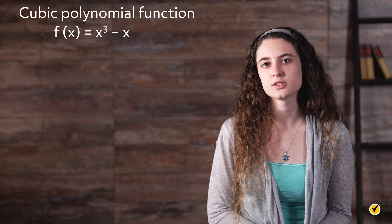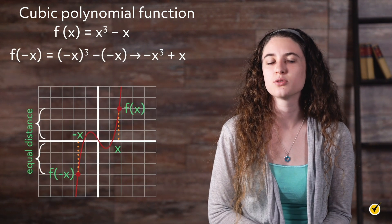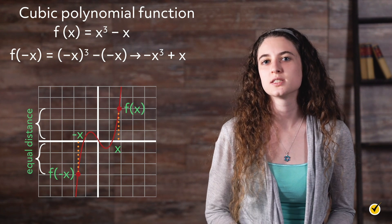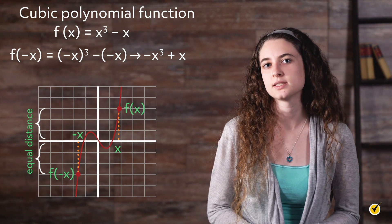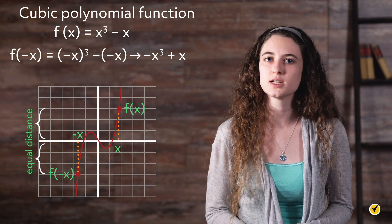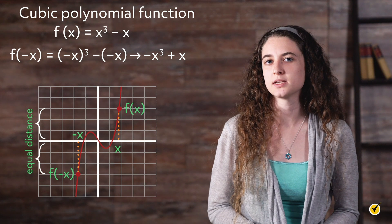The cubic polynomial function f of x equals x cubed minus x is classified as odd, because substituting negative x into the function results in the following: f of negative x equals negative x cubed minus negative x, which is the same as negative x cubed plus x. Factoring out negative 1 from each term results in negative x cubed minus x, which is equivalent to negative f of x.